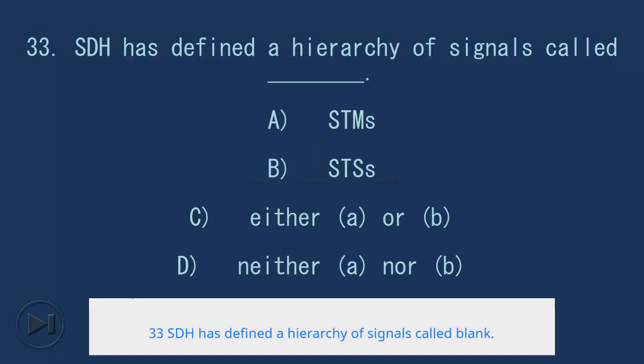33. SDH has defined a hierarchy of signals called blank. A. STM, B. STS, C. Either A or B, D. Neither A nor B. Answer: A. STM.